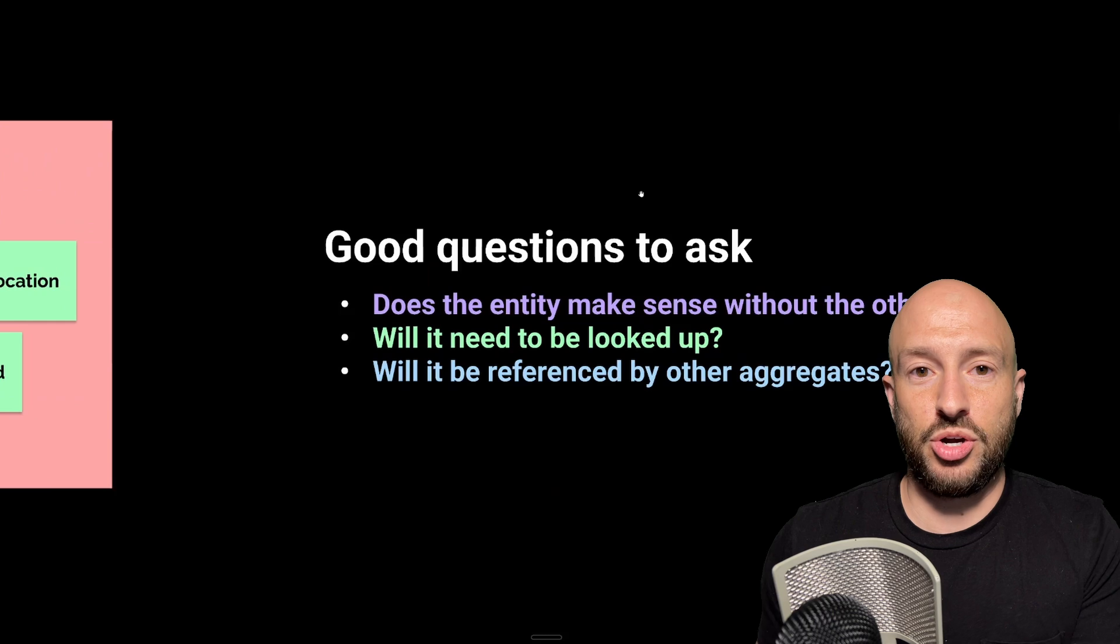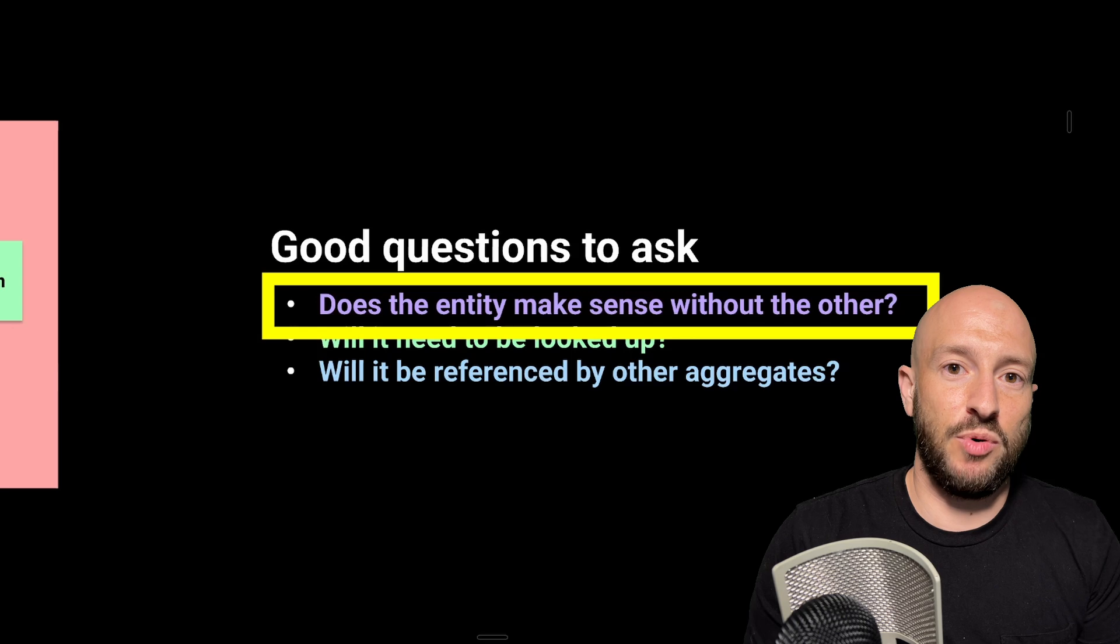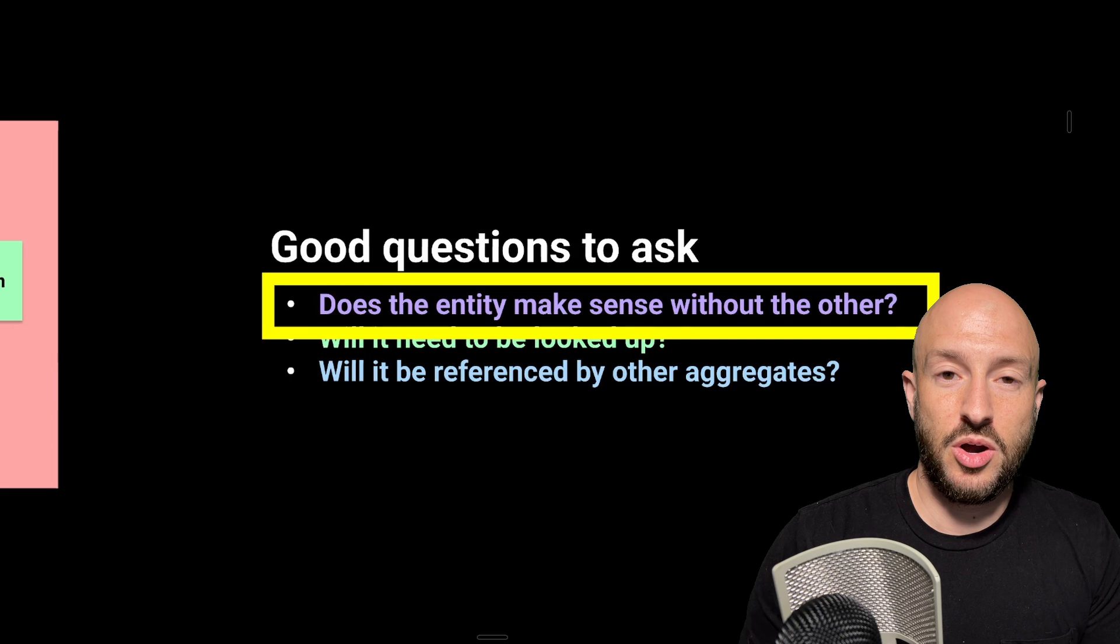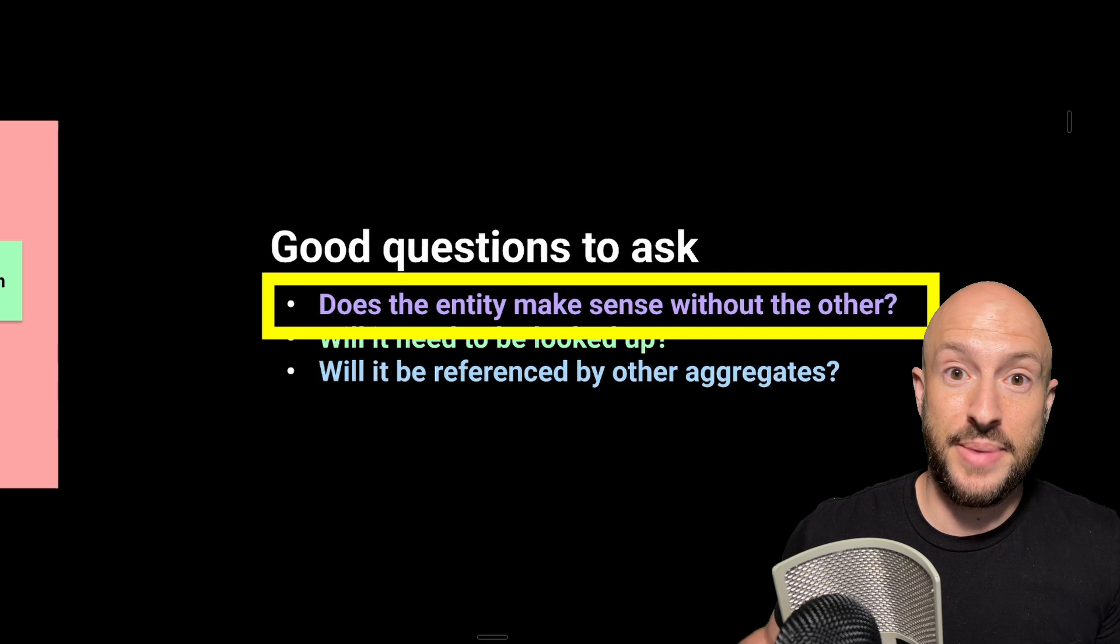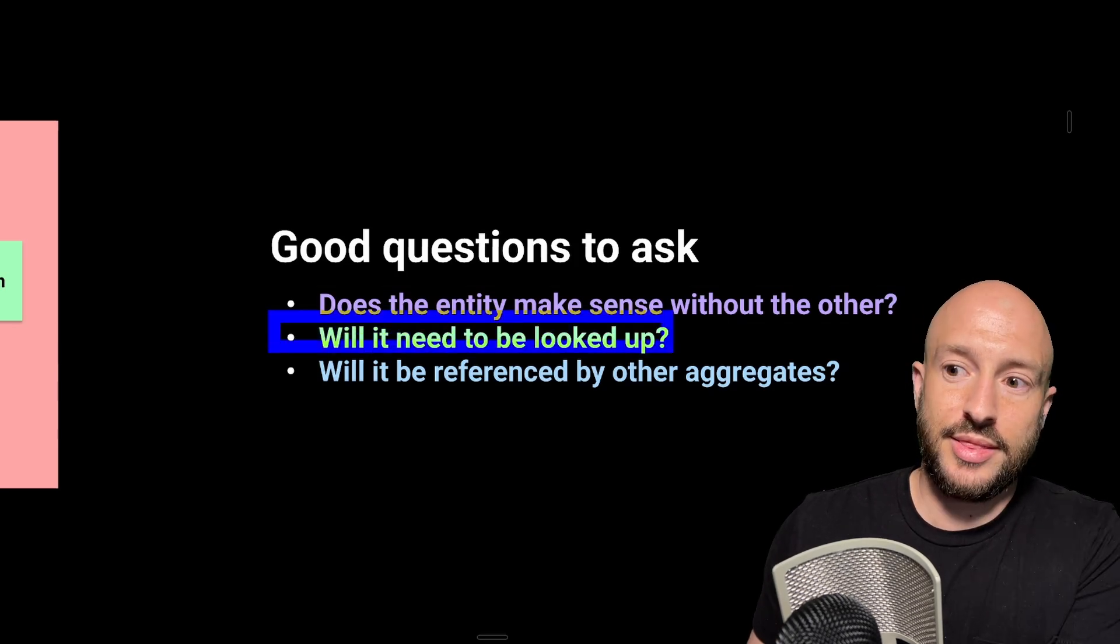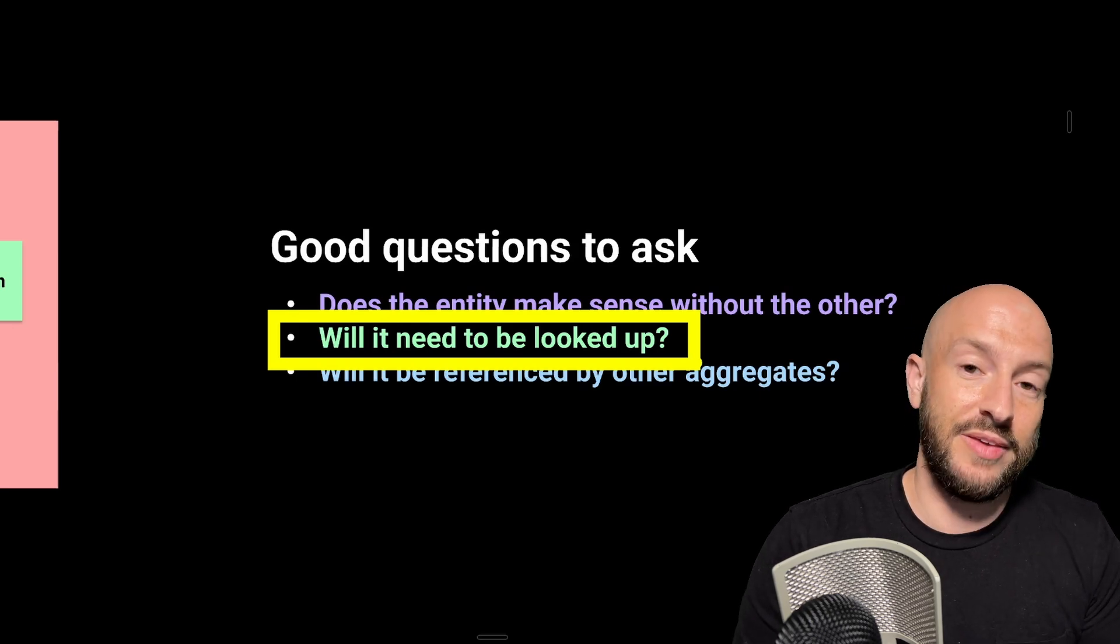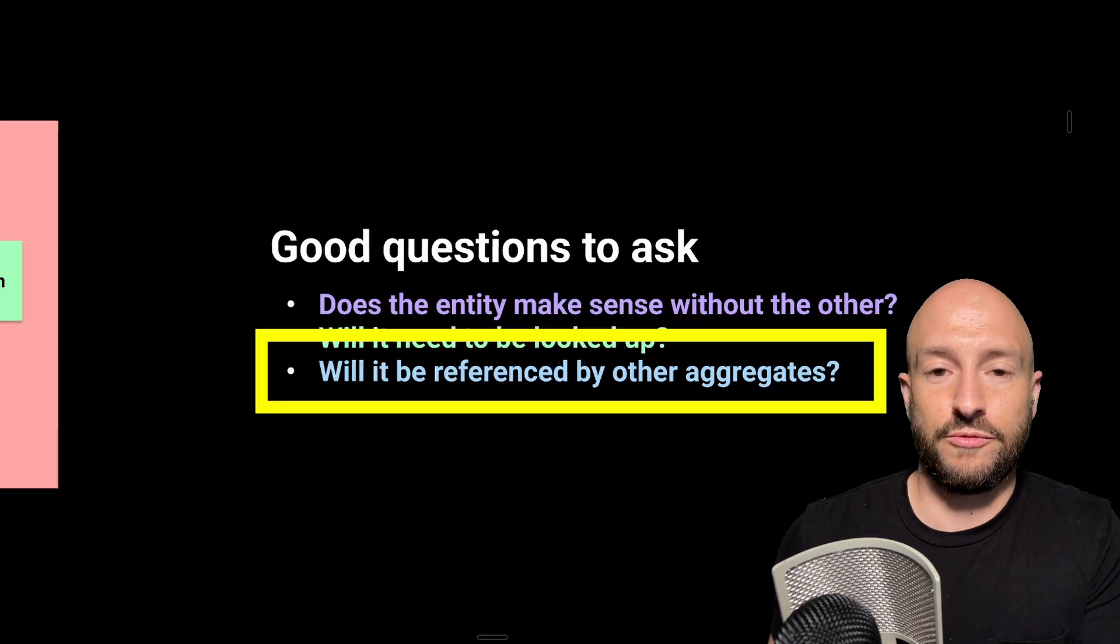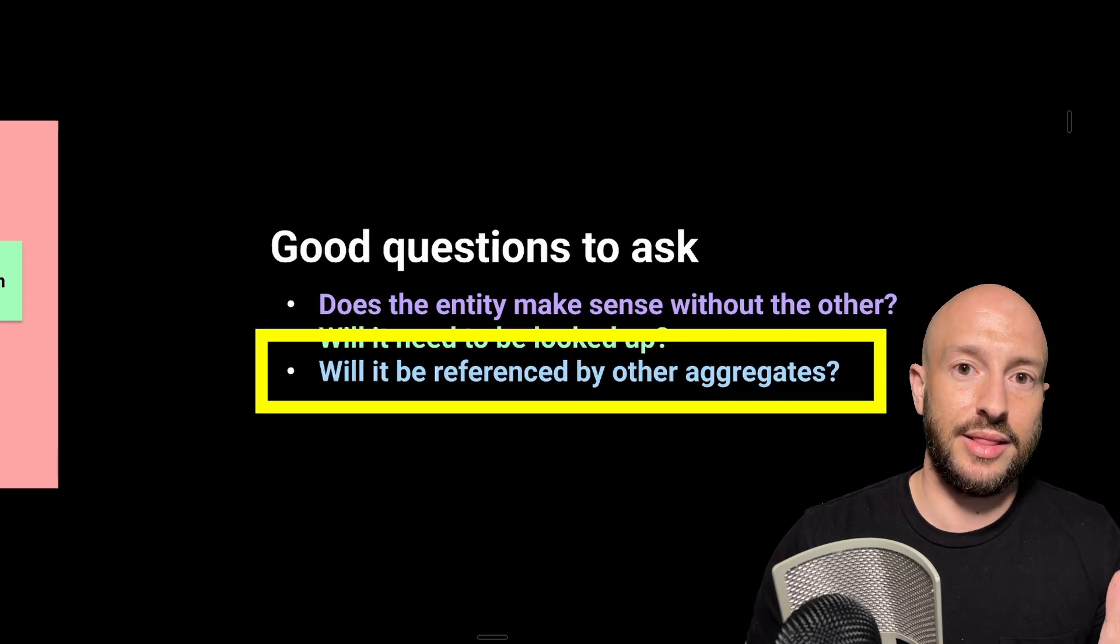And lastly, some good questions to ask when you're modeling. The first one is taking two entities. For example, we can take the host and the dinner and ask yourself, does a dinner make sense without a host? So if the entity doesn't make any sense without the other entity, then it might be a local entity and not an aggregate root. The next one is will it need to be looked up? So are you going to search for it by ID? If yes, then probably it's an aggregate root. And the last one is will it be referenced from other aggregates? If yes, then also it's probably an aggregate root. And like we said, take the ID, put in a value object and store it in the other aggregate.